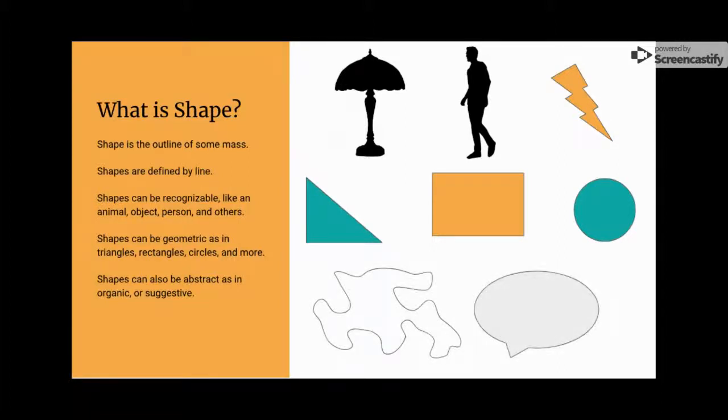And then there are other types of shapes, like abstract shapes. These shapes come in different forms as well. They can be organic or suggestive.